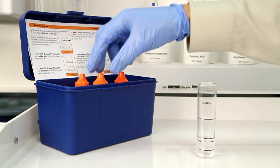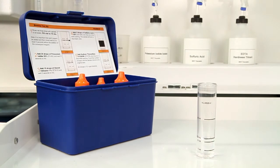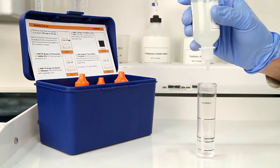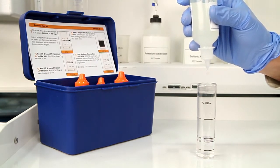The next step is to add 10 drops of starch indicator 1%. Hold the bottle vertically, and remember to swirl the vial for 5 seconds after the addition of each reagent.